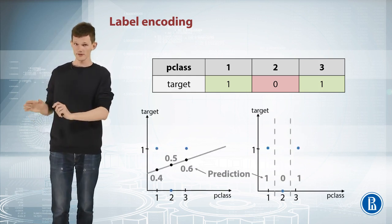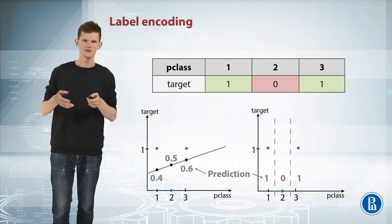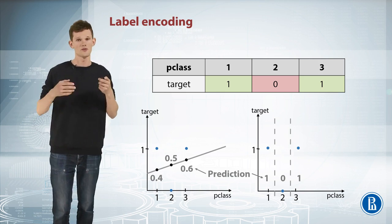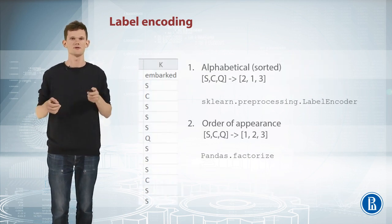But trees on the other side will just make two splits selecting each unique value and treat it independently. Thus, decision trees could achieve much better score here using this feature.